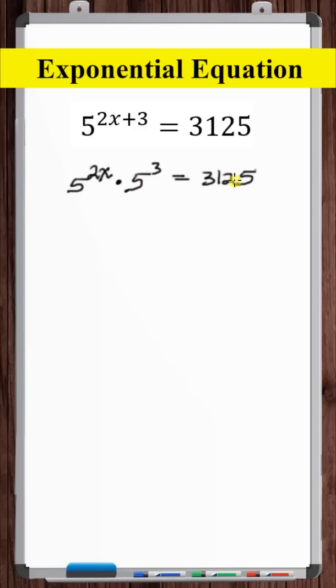Is this a power of 5? Well, 5 times 5 is 25, 25 times 5 is 125, 125 times 5 is 625, 625 times 5 is 3125.